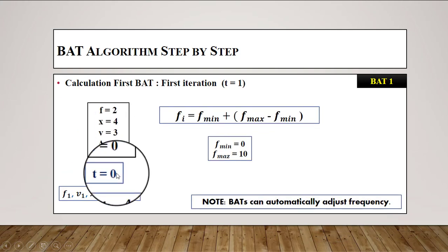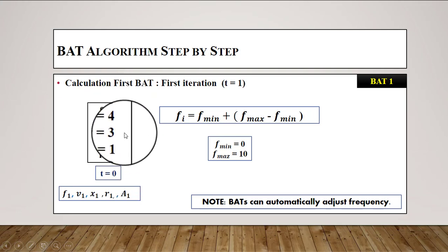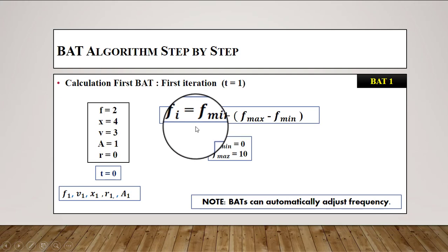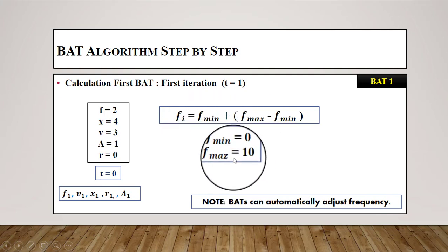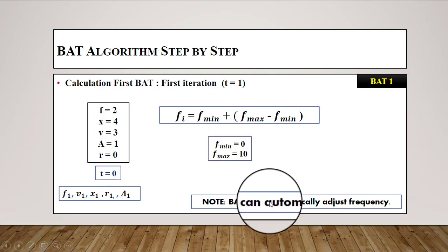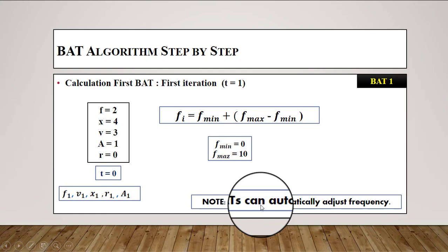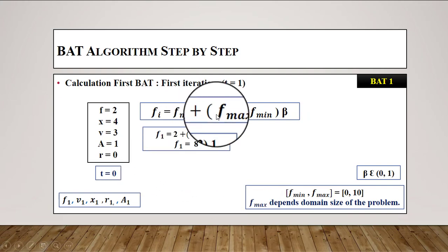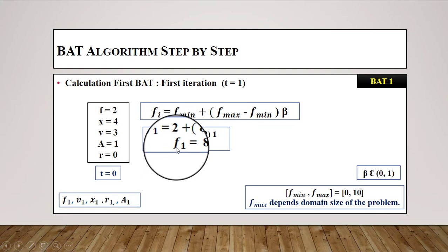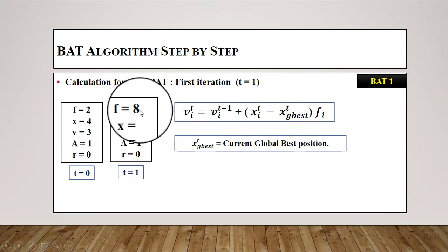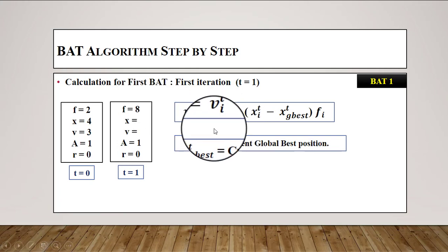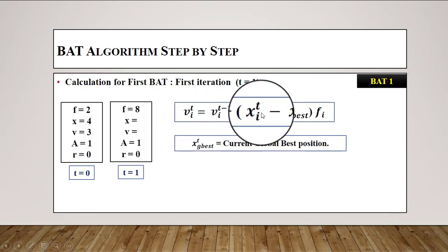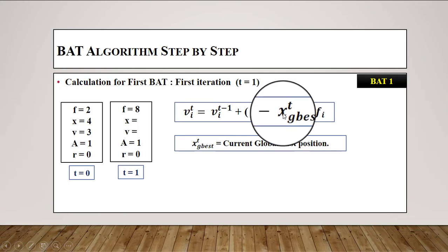To adjust frequency, we use the frequency equation with a minimum frequency and maximum frequency. The frequency range is 0 to 10, and bats can automatically adjust their frequency. For the first bat, using minimum 2 and maximum 8, the frequency at iteration 1 is calculated as 8. We then update the velocity using the velocity equation, which uses the current bat position, frequency, and xg_best — the best known position among all bats.